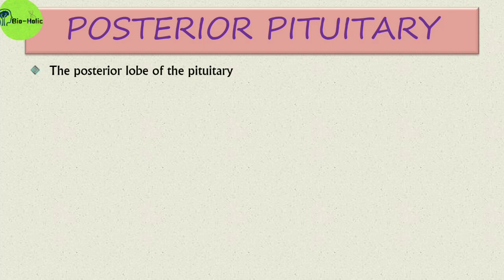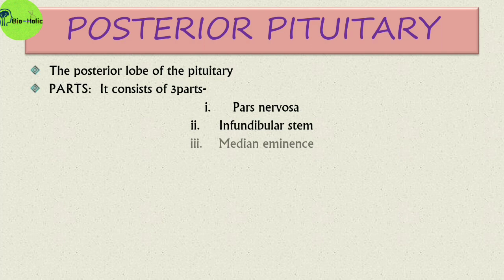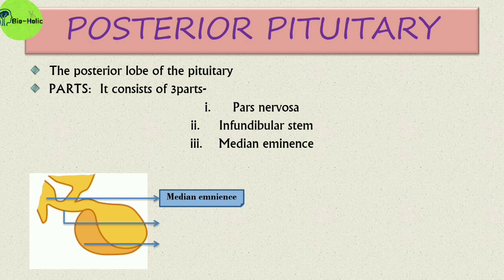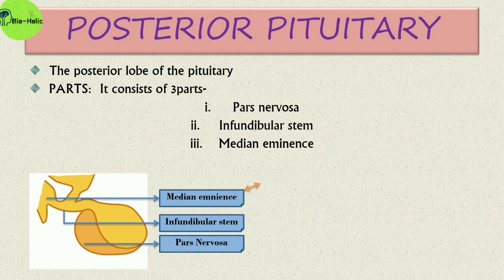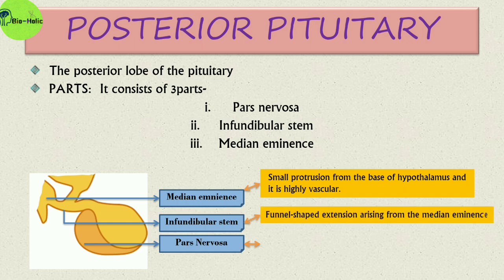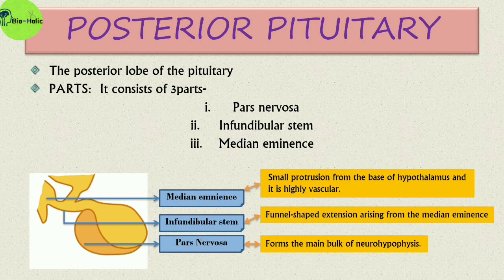Moving on to the posterior pituitary — the posterior pituitary is the posterior lobe of the whole pituitary. Like the anterior pituitary, it also has three parts: the pars nervosa, the infundibular stem, and the median eminence. The median eminence is a small protrusion from the base of the hypothalamus and is highly vascular. The infundibular stem is a funnel-shaped extension arising from the median eminence, and the pars nervosa forms the main bulk of the neurohypophysis.